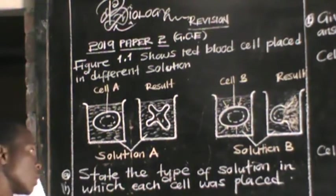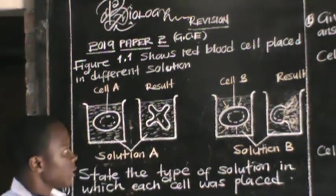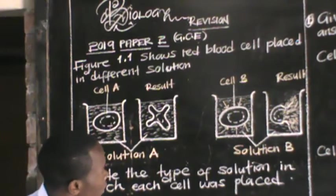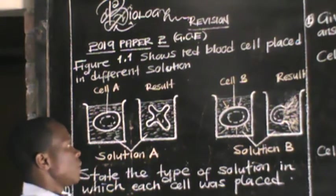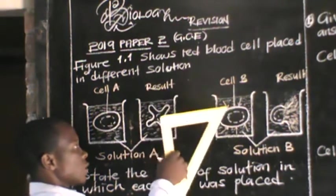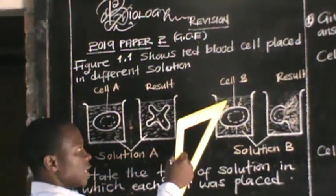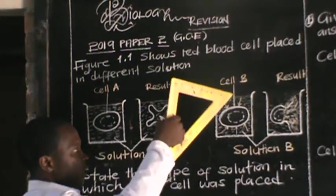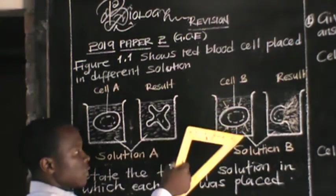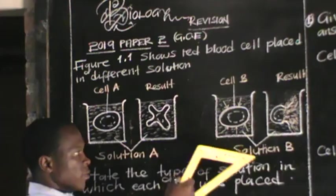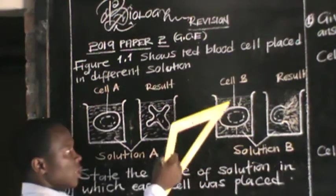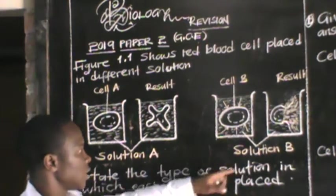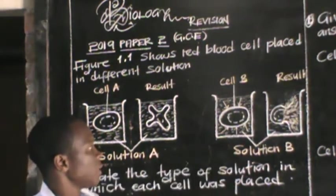Similarly, cell B was placed in solution B. The first diagram shows the red blood cell submerged in solution B.